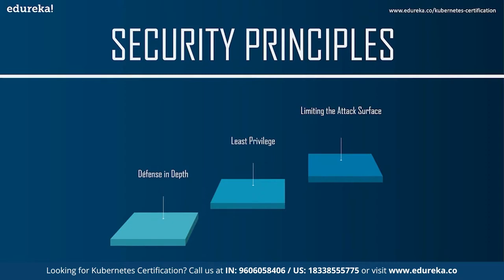The third Kubernetes security principle is limiting the attack surface — the set of all possible ways a system can be attacked. The more complex the system, the bigger the attack surface. Consider the castle metaphor: the longer the castle walls, the more archers needed to patrol them efficiently. A circular castle is most efficient. In software systems, the fundamental way to reduce the attack surface is to minimize the amount of code, since greater complexity means more likely latent vulnerabilities.